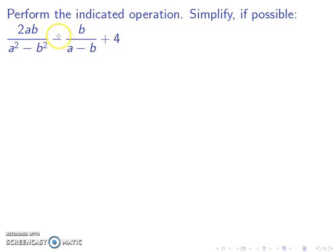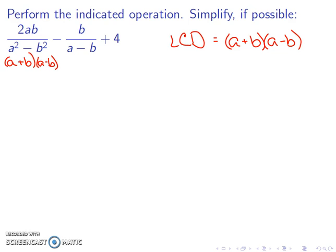We want to perform the operations and simplify if possible. Any time we're adding or subtracting fractions, the first step would be to factor the denominator. This factors into (a + b)(a - b). So my least common denominator will be (a + b)(a - b), since those are the only things currently on the denominator.